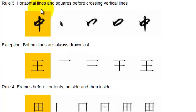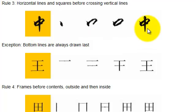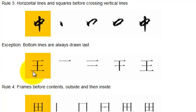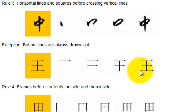Rule number three: horizontal lines in squares are drawn before crossing vertical lines. In this character you see a vertical line down the middle — that is actually the last stroke. So the sequence is: first stroke, second stroke, third stroke, and then the vertical line last. The exception: bottom lines are always drawn last. In this character the bottom line is stroke four, following the top-down rule: stroke one, stroke two, vertical line stroke three, then the final bottom line stroke four.